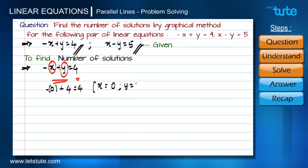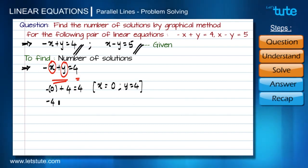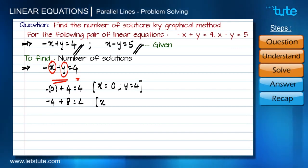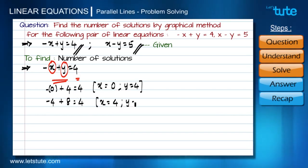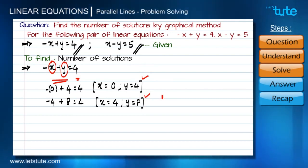For the second set of values, let's take x = 4. We have a negative sign with x, so it becomes -4. Then y has to be 8 so that the right hand side becomes 4. So the second set of values is x = 4 and y = 8. Now we have two sets of values for x and y. Let's plot these points on the graph and get a straight line for this equation.